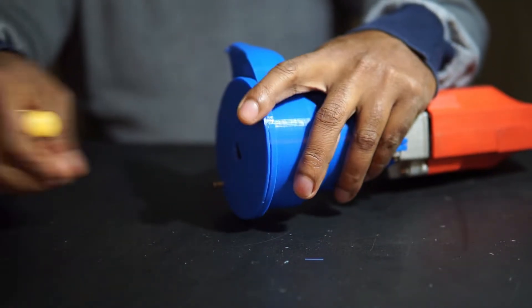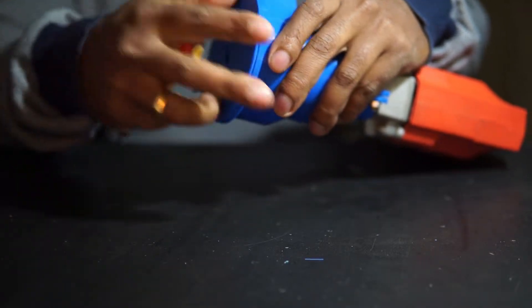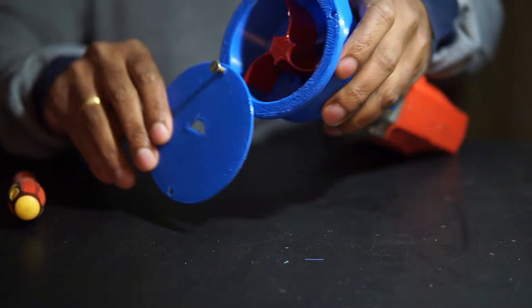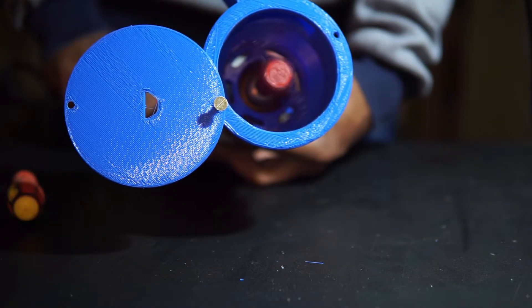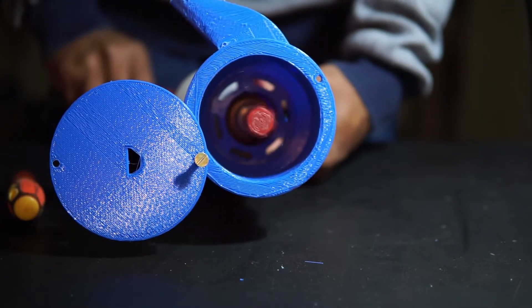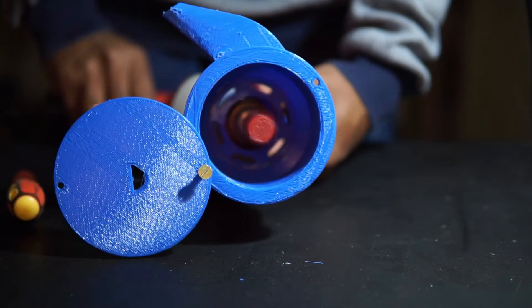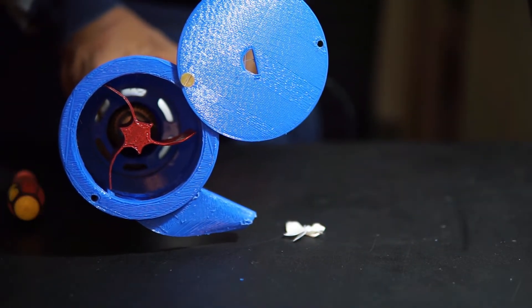Now let's remove the lid of the end cap to demonstrate the operation of the propeller blades. Now let's power the drill and press the trigger to watch the operation. Let's see how the device is achieving the air throw.